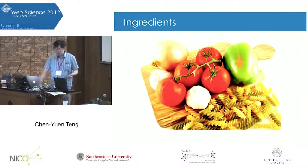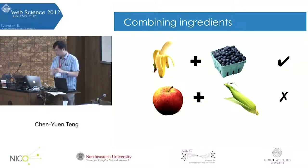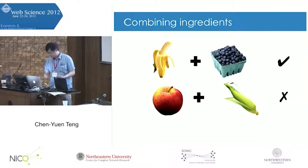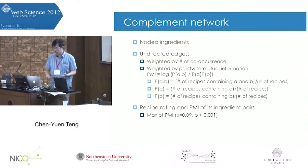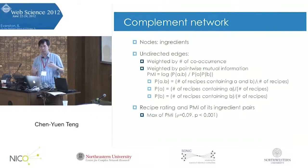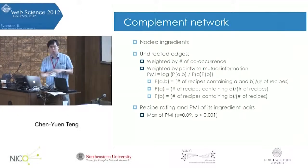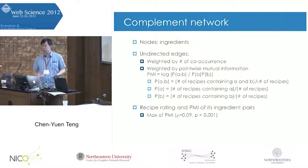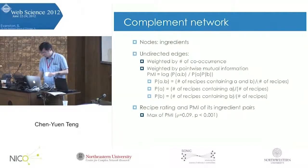Let's begin with the ingredient network. When we mix ingredients, maybe you want to mix banana with blueberry, but maybe you don't want to mix apple and corn. We use this information to build what we call a complement network. We have two choices for weighting: the raw frequency of co-occurrence, or pointwise mutual information, which measures the likelihood that two ingredients co-occur in the same recipes.